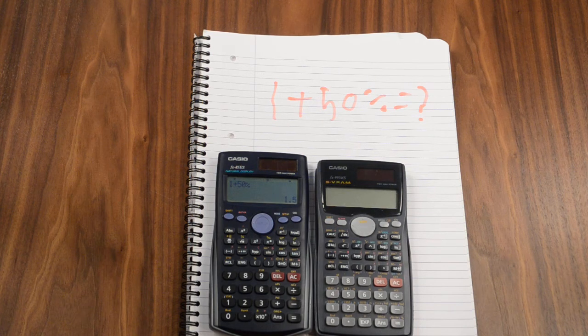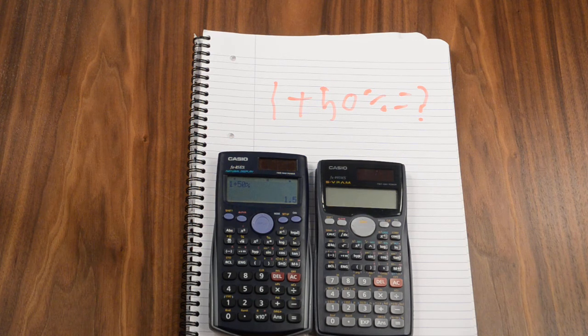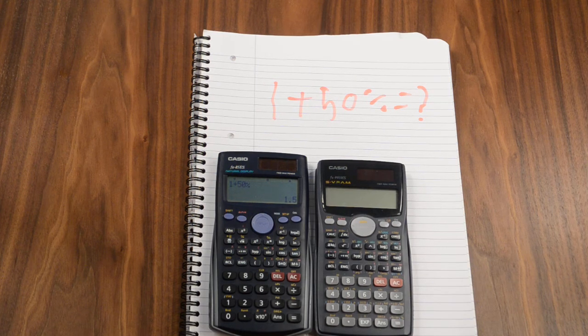Half of 1 is a half, add 2 together, you get 1.5, makes perfect sense.